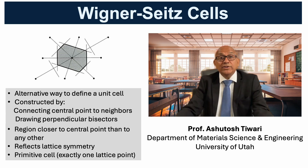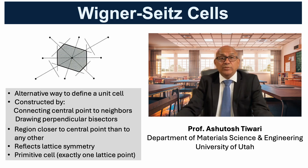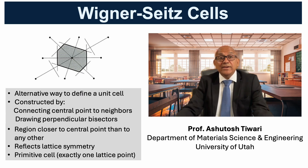This construction works in two or three dimensions, and the resulting shape always reflects the symmetry of the lattice. The Wigner-Seitz cell is a type of primitive cell, meaning it contains exactly one lattice point. In real space, it helps us visualize local environments around atoms. And in reciprocal space, the exact same construction defines the first Brillouin zone, making this concept a key stepping stone in crystallography and electronic structures.